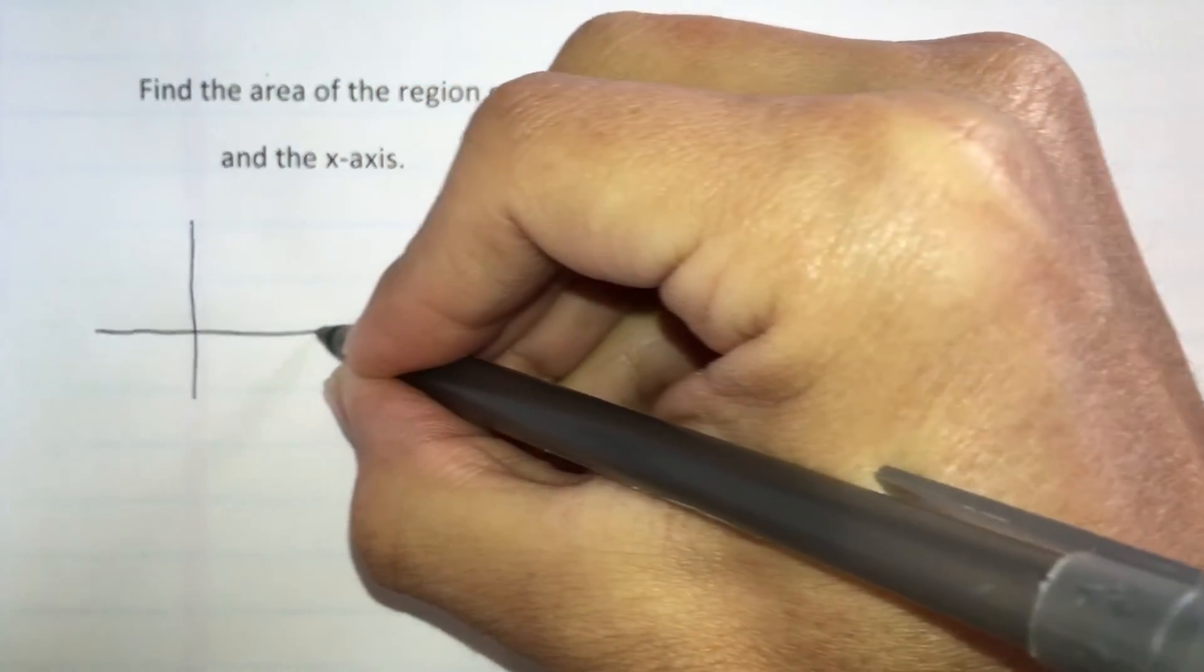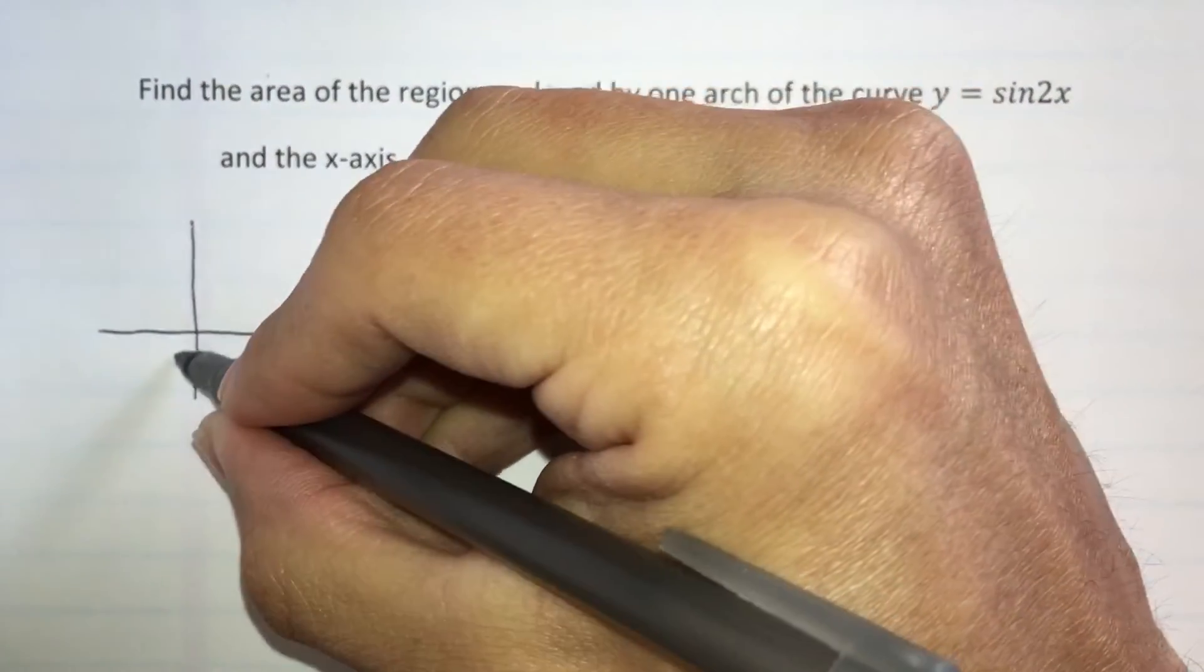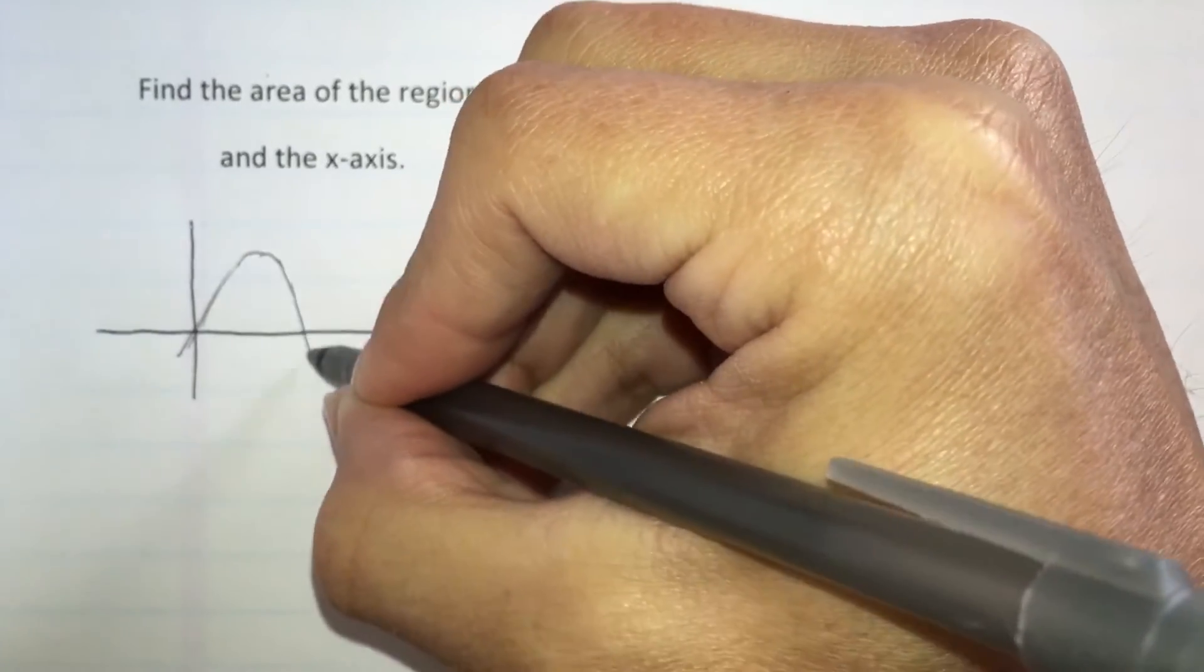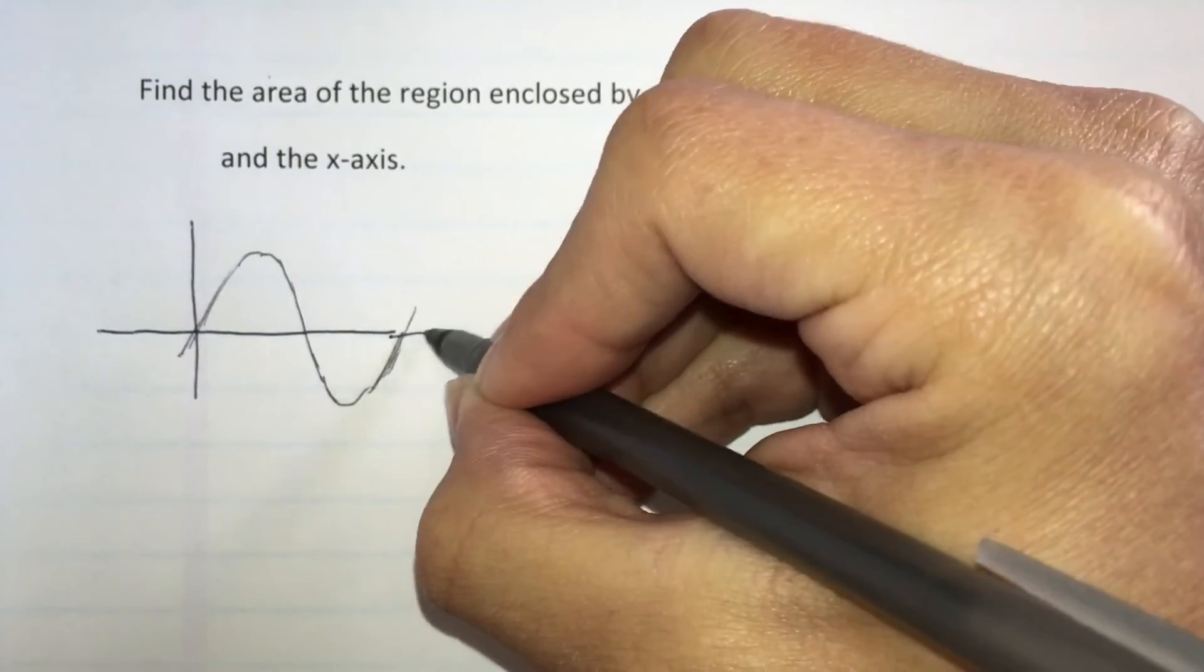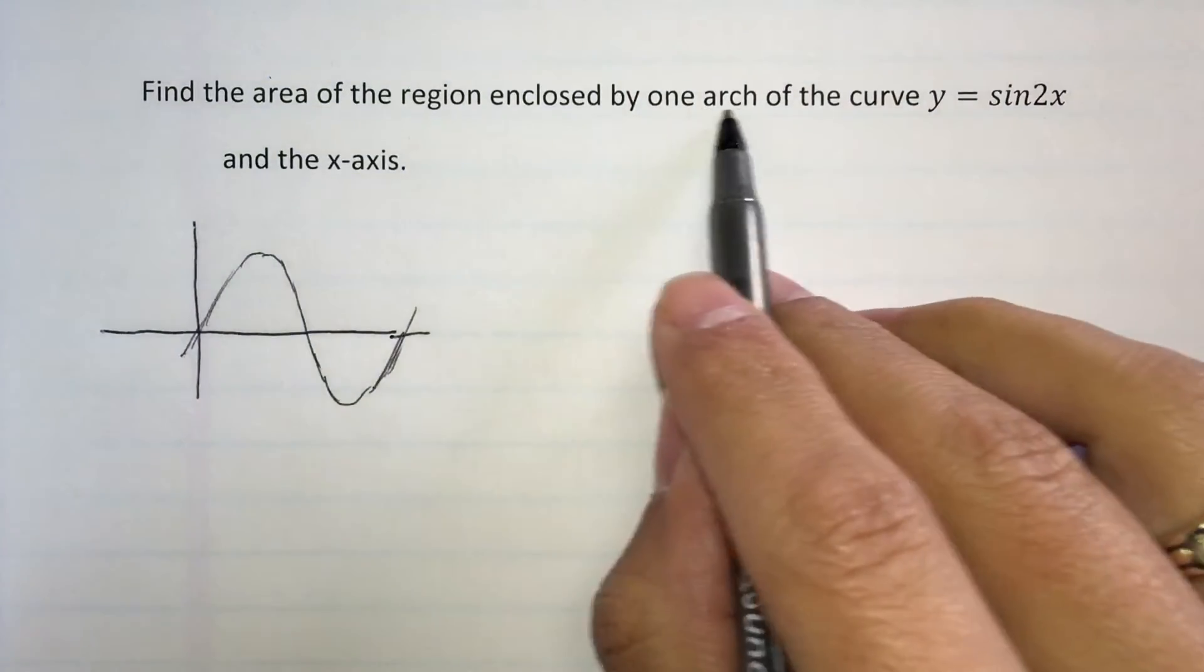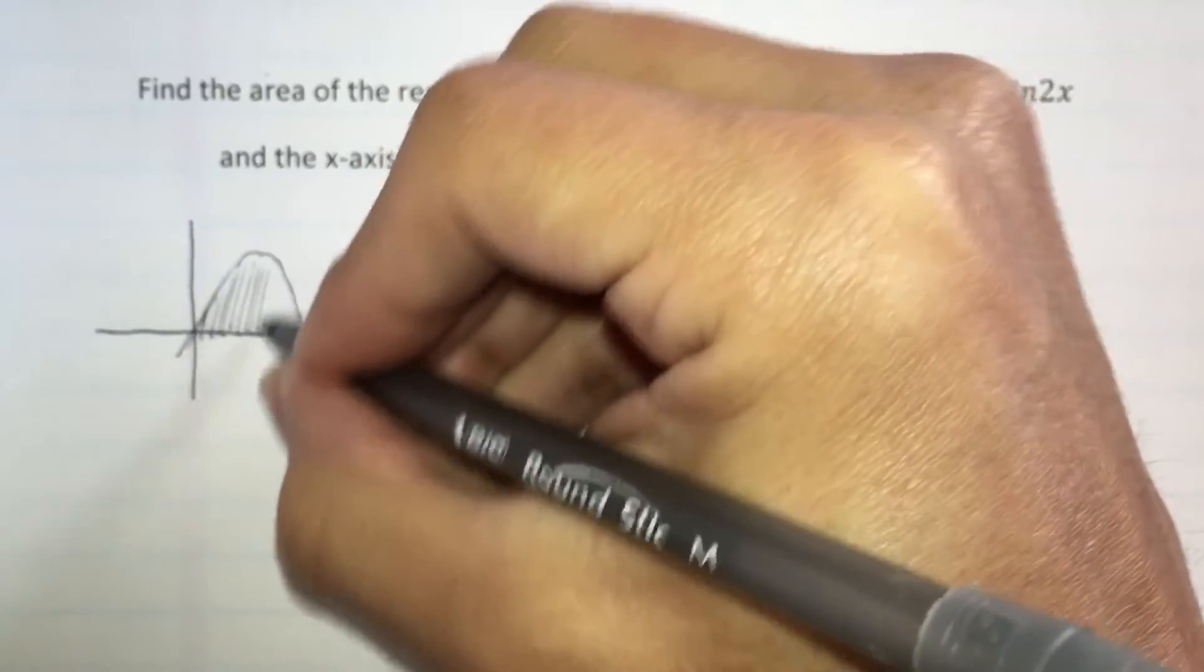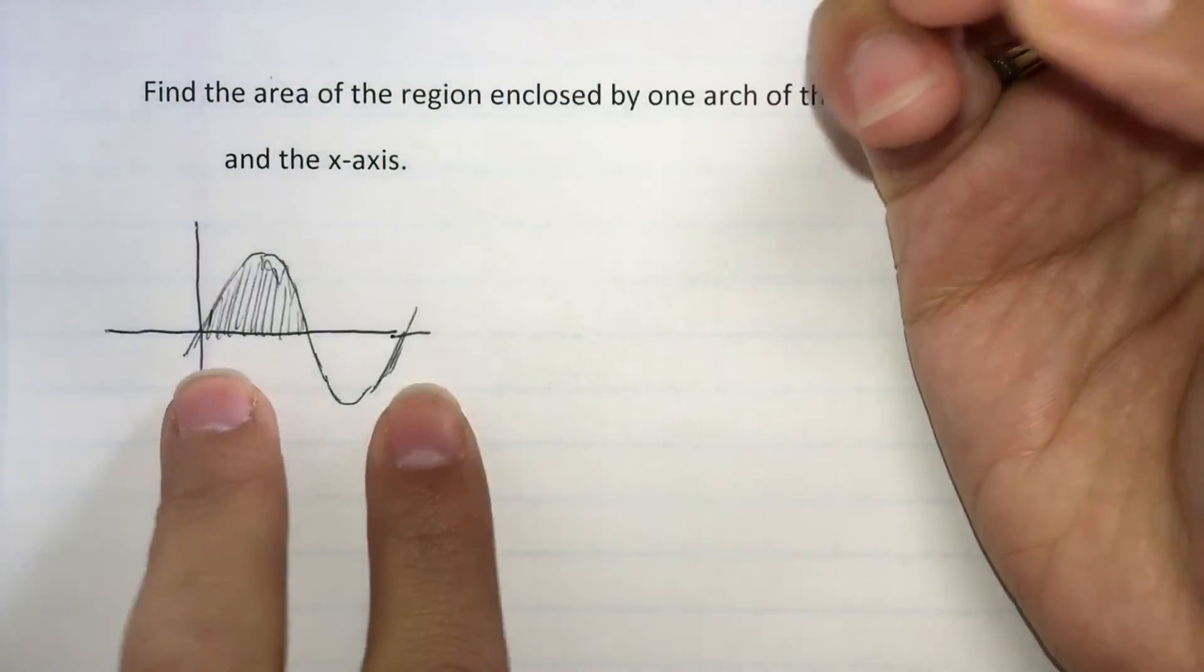Sometimes making a sketch is helpful. So the sine function looks like this, the parent function, and we're asked to find the region enclosed by one arch, so we're asked to find this region.